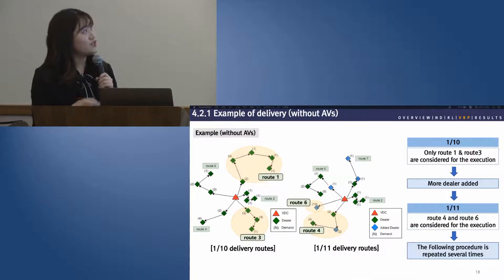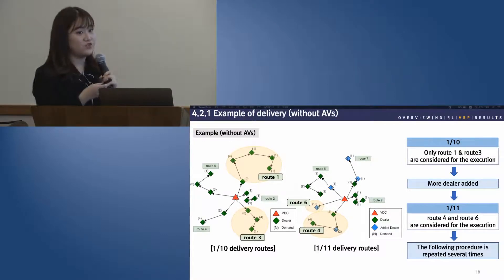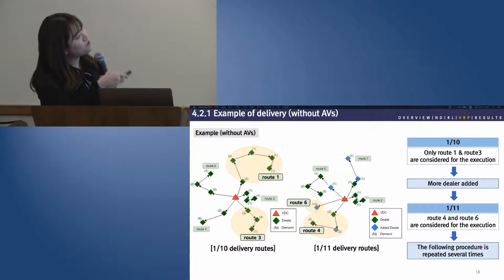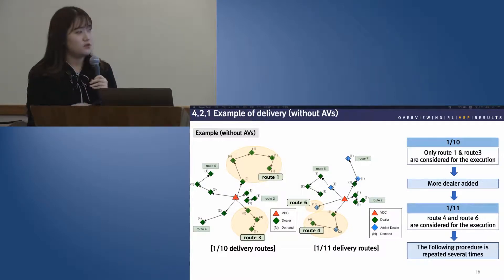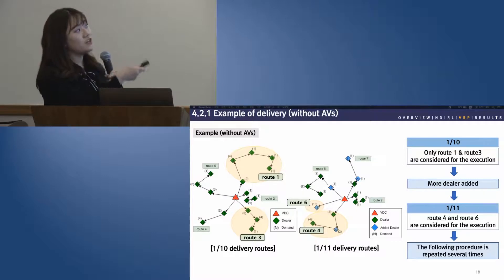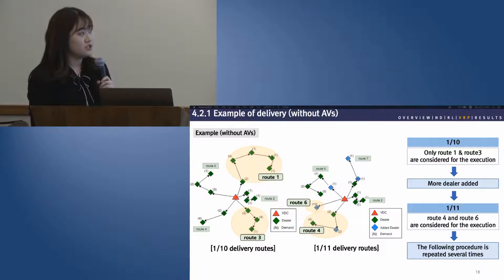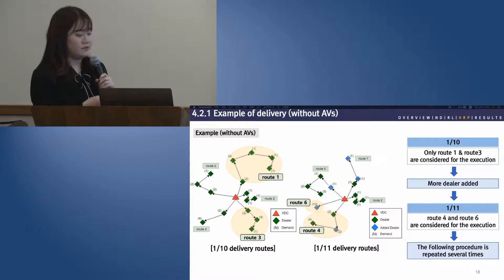To illustrate, the slide shows the delivery of January 10th and 11th with a delta value of 8, meaning at least 8 cars should be loaded onto a truck. Out of five routes, only routes one and three are considered for execution. For the next day, more dealers are added, and only routes four and six are considered for execution. This procedure is repeated several times.